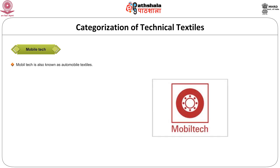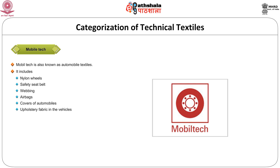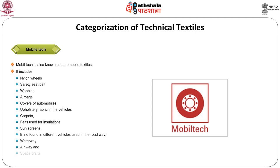The next category is mobile tech, also known as automobile textiles. This includes textile components like nylon wheels, safety belts, webbing, airbags, covers of automobiles, upholstery fabrics in vehicles, carpets, felts used for insulation, and binders found in different vehicles used in roadways, waterways, airways and spaceways. This is represented by a vehicle hand wheel. Some pictures of mobile textiles are airline upholsteries and nylon tires.